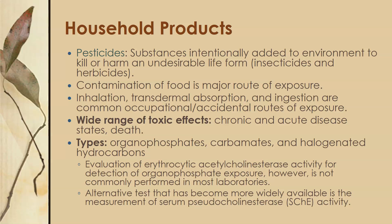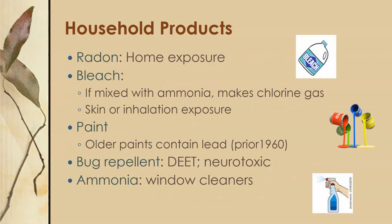The types of pesticides include organophosphates, carbamates, and halogenated hydrocarbons. To test for exposure, you evaluate erythrocytic acetylcholinesterase activity for detection of organophosphate exposure; however, this is not very commonly performed in most laboratories and would be a send-out test. An alternative test that has become more widely available is measurement of serum pseudocholinesterase activity to detect organophosphates.